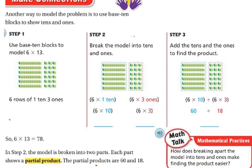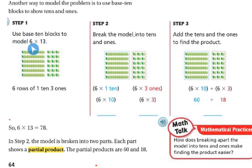So another way is to model the problem is to use the base 10 blocks to show 10s and 1s. So if I'm going to do that, let's look at step 1. So use the base 10 blocks to model 6 times 13. So I have 6, 10, 1, 2, so I have a 10 plus 1, 2, 3, that's my 13s. Let me kind of circle that. So this is 10 plus 1, 2, 3, that's 13 and I'm going to have 6 of them, right? So 1, 2, 3, 4, 5, 6. So I have 6 thirteens. Does that make sense? Because each of these is 10 and then each of these represent 1. So I'm going to have 6 rows, 1 ten in each row and 3 ones in each row.